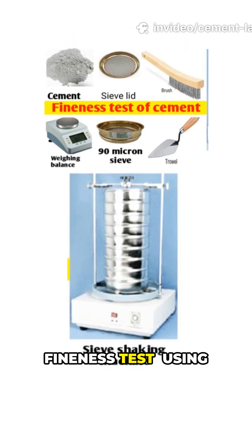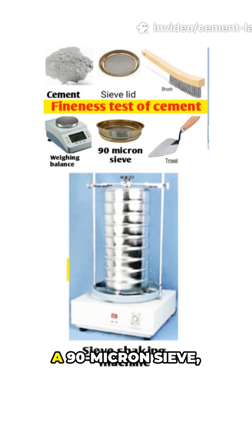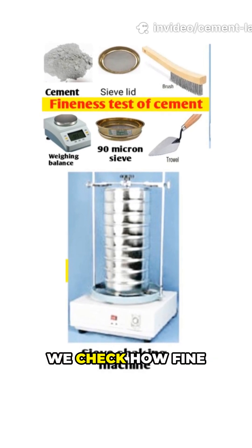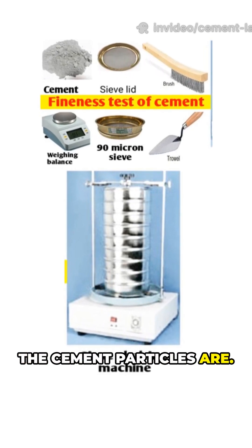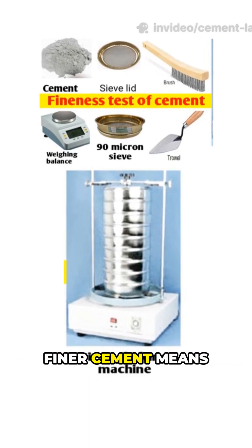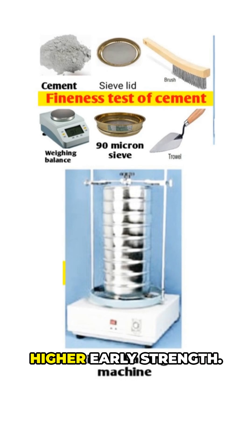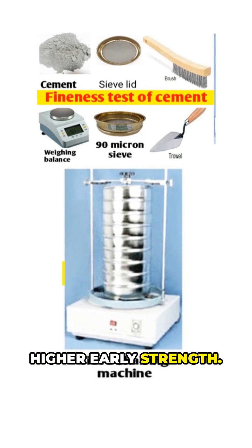Fineness test: using a 90 micron sieve, we check how fine the cement particles are. Finer cement means faster hydration and higher early strength.